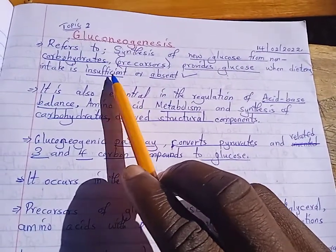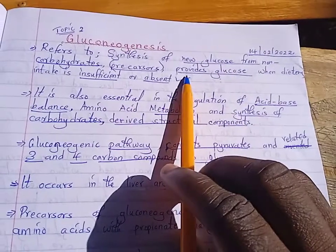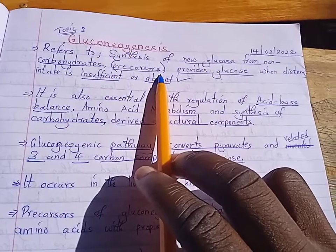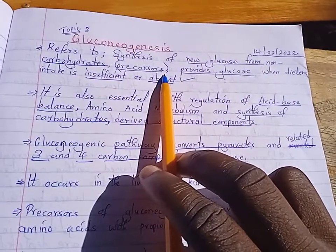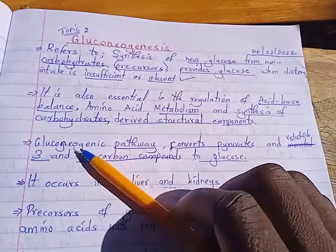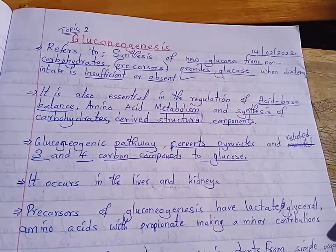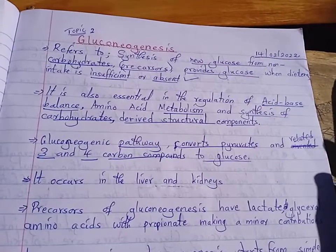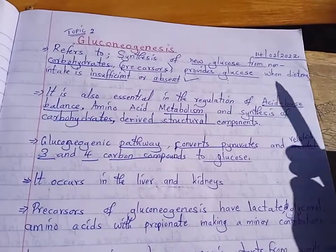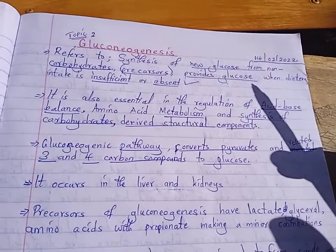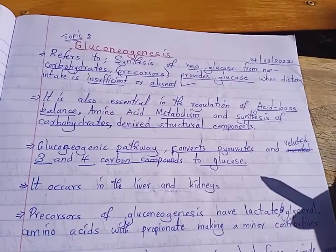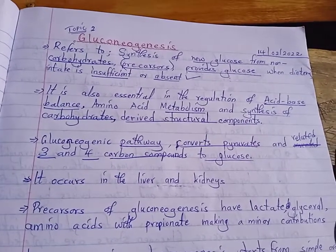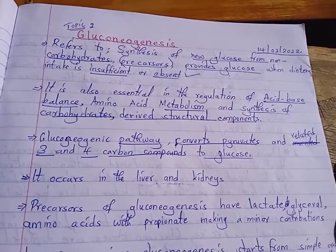It's called gluconeogenesis. Before we go ahead to discuss what happens in gluconeogenesis, you should ask yourself: have you ever stayed without eating? Like when you are fasting, or when you are doing normal exercise, or when you go a long time without eating anything — what happens to your body? That's what we are going to discuss under gluconeogenesis. So just stay tuned, sit back and relax for today's lecture.